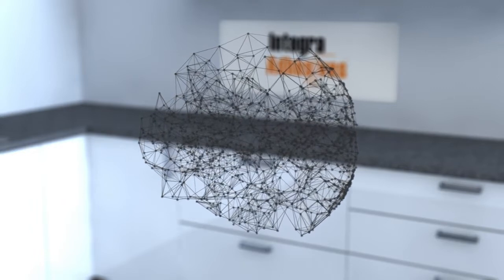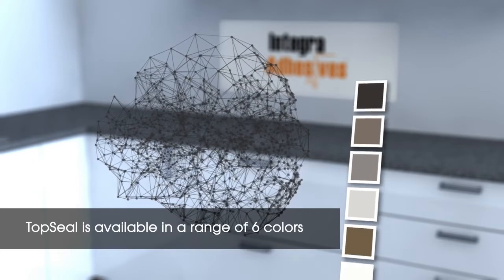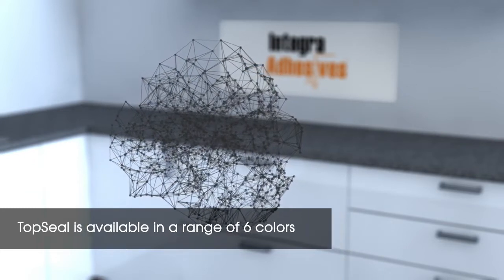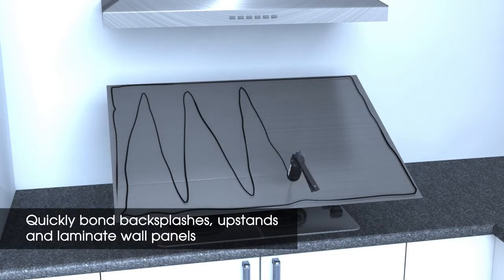Top Seal is available in a range of six standard colors. Top Seal bonds and seals backsplashes, upstands, and laminate wall panels quickly and easily with phenomenal instant-grab strength.